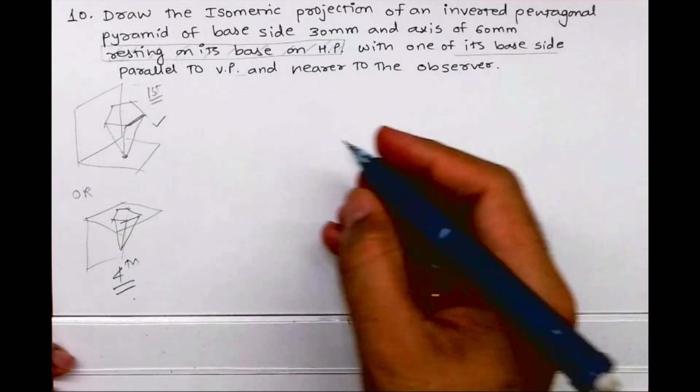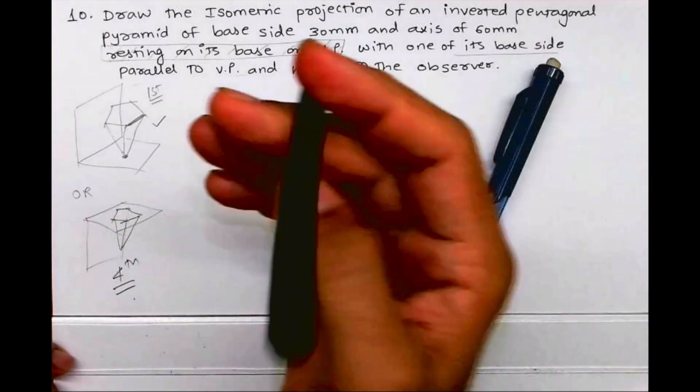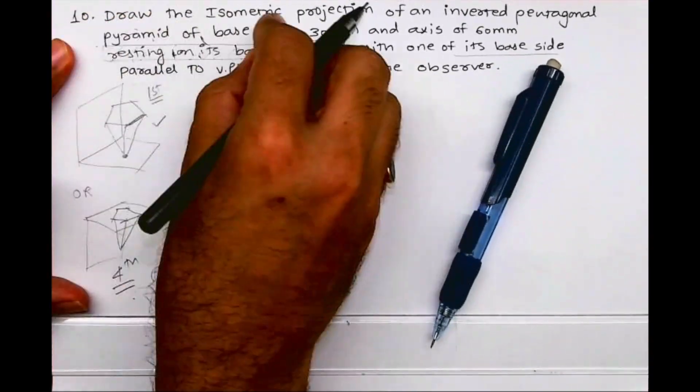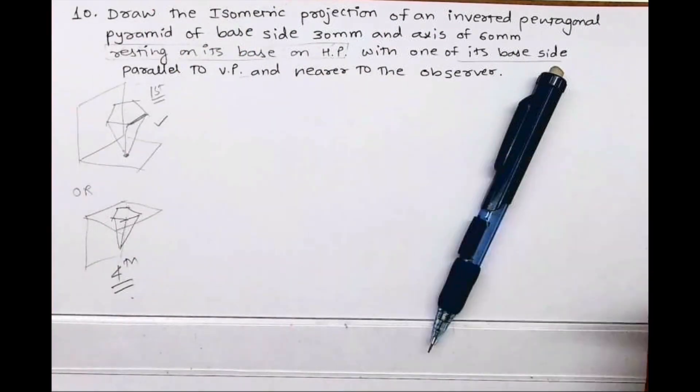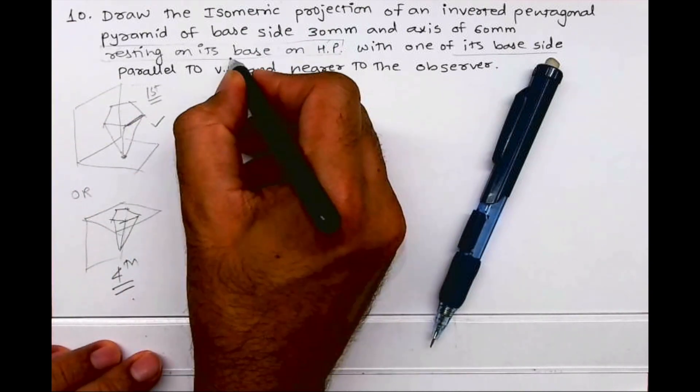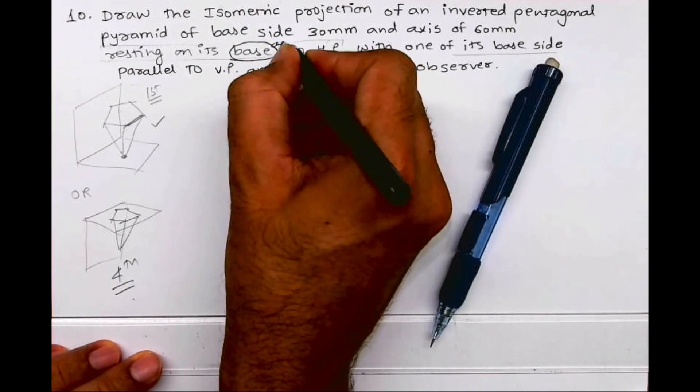So we need to erase this. Even if they say inverted that is more than enough, or if they want to say, they can write resting on its apex on HP instead of base.